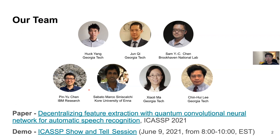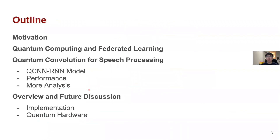For today, this paper will talk more about how we motivate this approach and how it is related to speech processing. By those motivations, we will also define our computational architecture, and we will introduce some quantum convolution — especially this kind of algorithm — how to apply quantum convolution for speech processing, including three different variants. The first one is the QCN-RNA model proposed in this paper, and also some performance study and more visualization analysis. And finally, there will be an overview and future discussion.